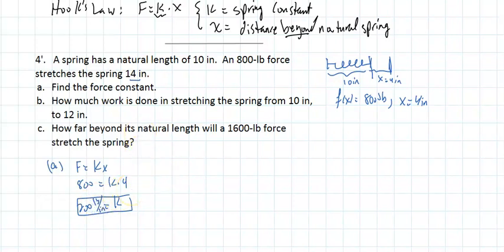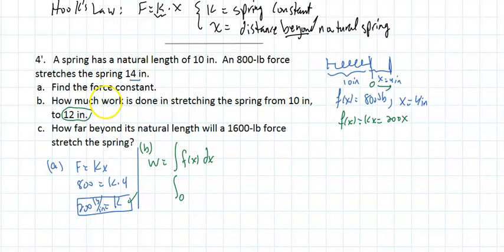Part b asks how much work is done stretching the spring to 12 inches total length, which is 2 inches beyond the natural length. Work is the integral of F(x)dx. The force is 200x, so the integral from 0 to 2 of 200x dx equals 100x² evaluated from 0 to 2, which gives 400 inch-pounds.